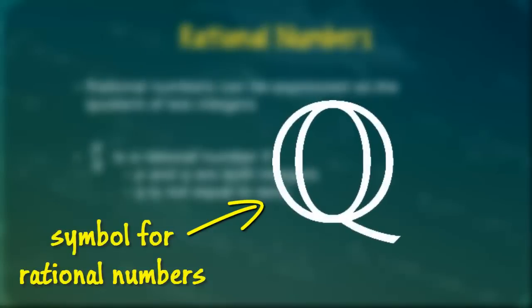And for this reason, all integers are also rational numbers. Five divided by one, for example, is equal to five. The set of rational numbers is often denoted using the blackboard bold letter Q, where Q stands for quotient.